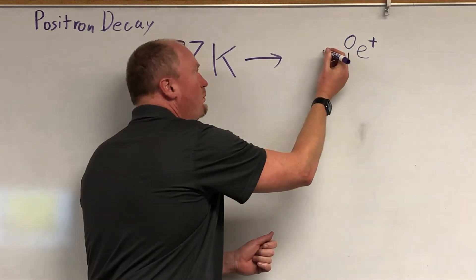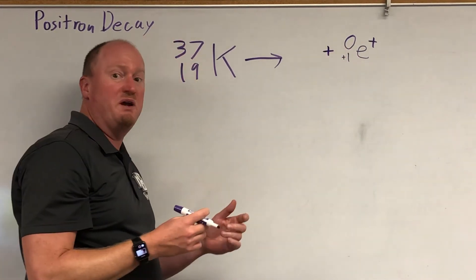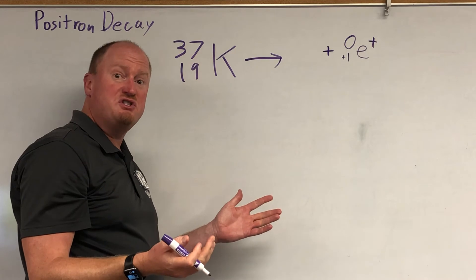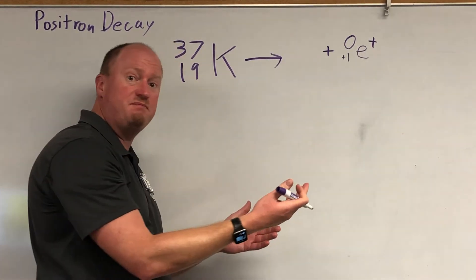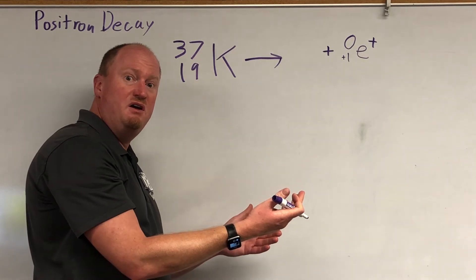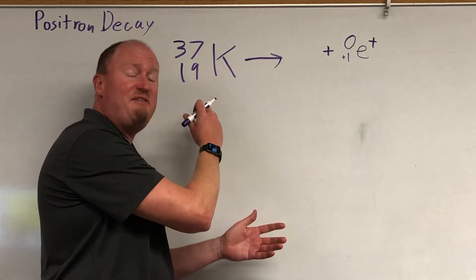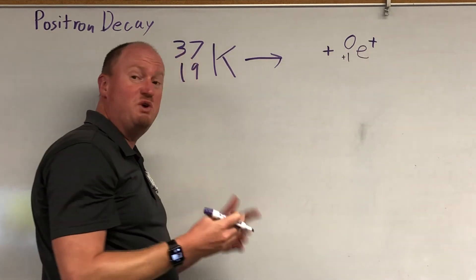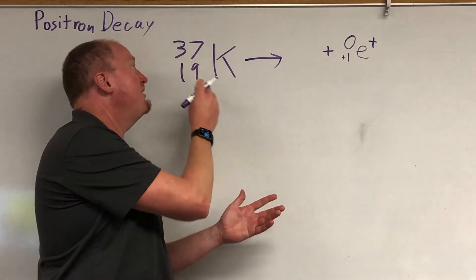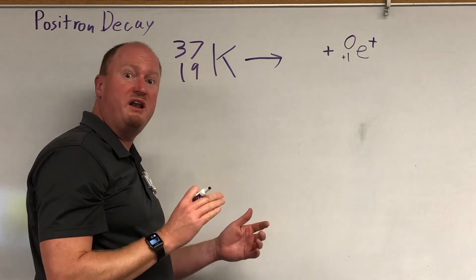So what's going to be left of old potassium here once the positron goes away? Charge is conserved. If you're releasing a positive, then you'll have to have less positive than when you started. If a plus one charge leaves, you've got to have one less positive, which means one less proton.